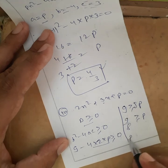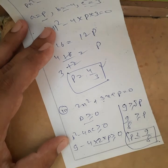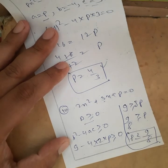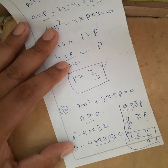So p ≤ 9/8 is our answer. So I hope you understood all the questions of the exercise which I have explained, and you will be able to solve all the remaining questions of the exercise. Thank you.